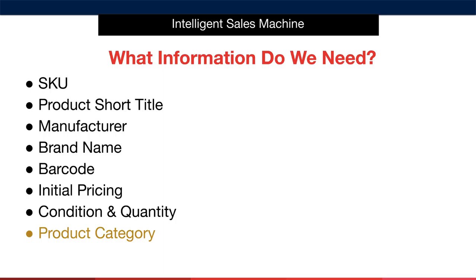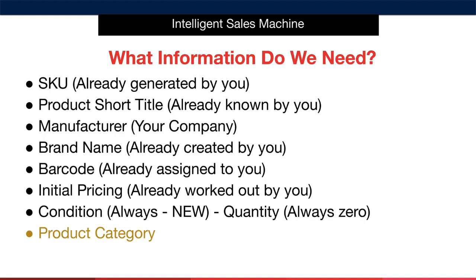What we require is the SKU, Product Short Title, Manufacturer, Brand Name, Barcode, Initial Pricing, Condition and Quantity on Hand, and the Product Category. The SKU you will have already generated in a previous module. The Product Short Title is really what the product is — for example, a six-foot blue pool rake. The manufacturer of the product is you, your company. The brand has already been created by you previously, and the barcode has already been assigned by you from your list.